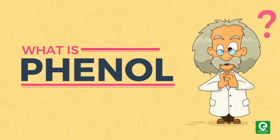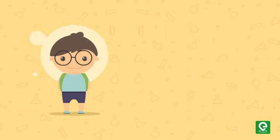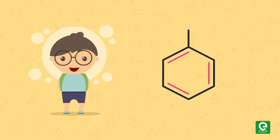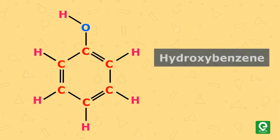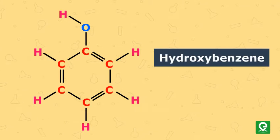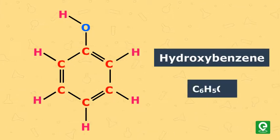What is Phenol? Phenol, also known as carbolic acid, is an aromatic organic compound with the molecular formula C6H5OH.